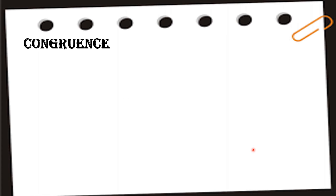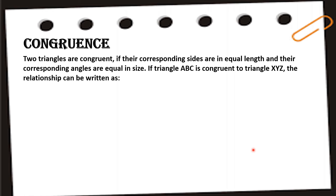Now let's talk about congruence. Two triangles are congruent if their corresponding sides are equal in length and their corresponding angles are equal in measure. If triangle ABC is congruent to triangle XYZ, the relationship is written as: triangle ABC ≅ triangle XYZ. This symbol (≅) means congruent — the figures must be truly equal in length.